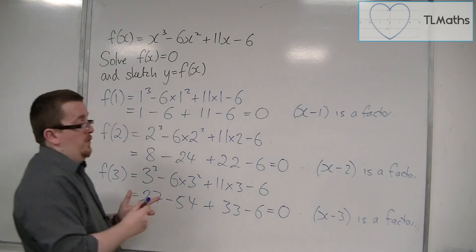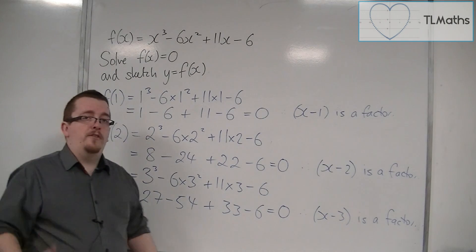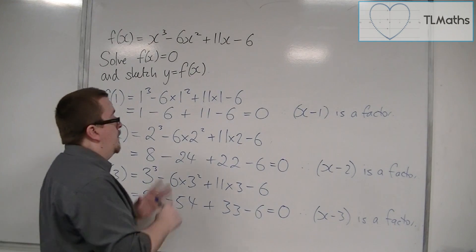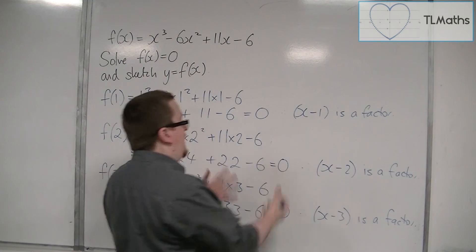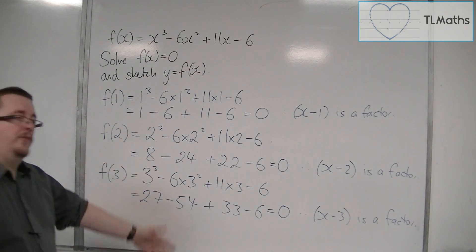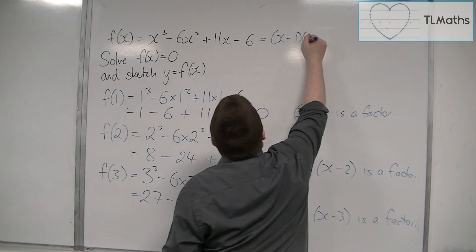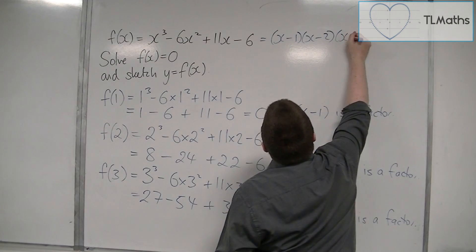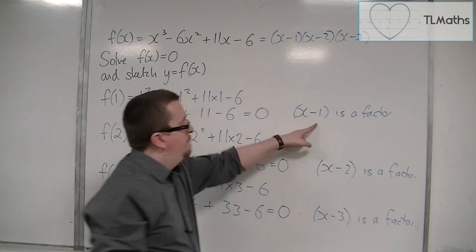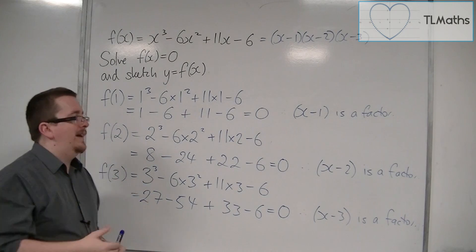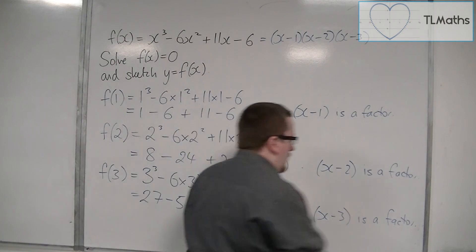Now in general, once you've found one factor, the polynomial division route is a lot quicker. But what we've done using the factor theorem 3 times is that we've shown that f of x can be written as x minus 1 times x minus 2 times x minus 3. Those 3 multiply together, 3 linear factors.